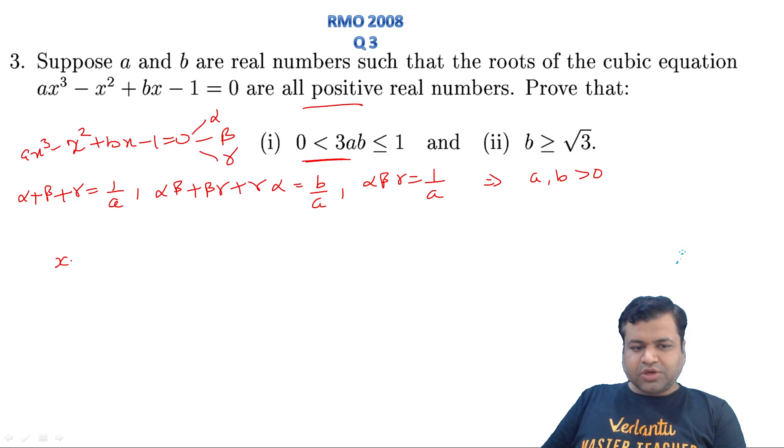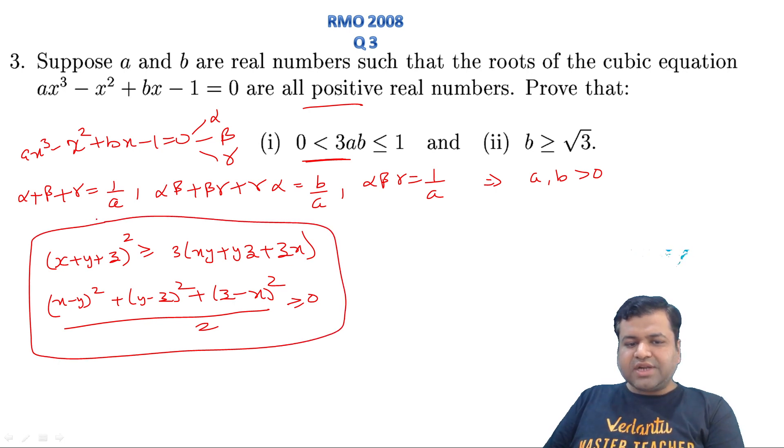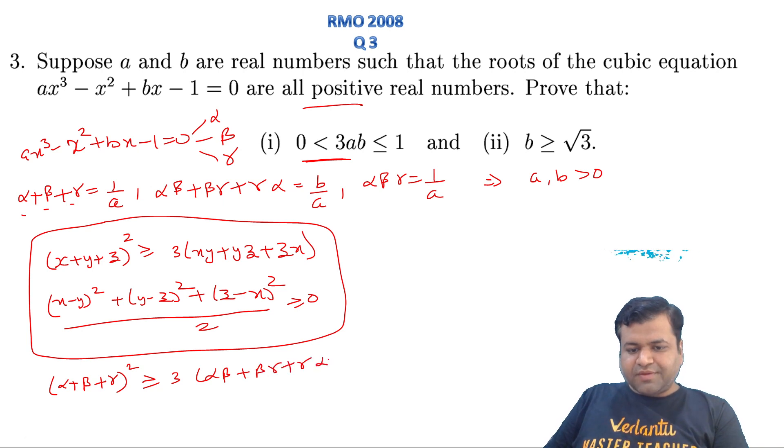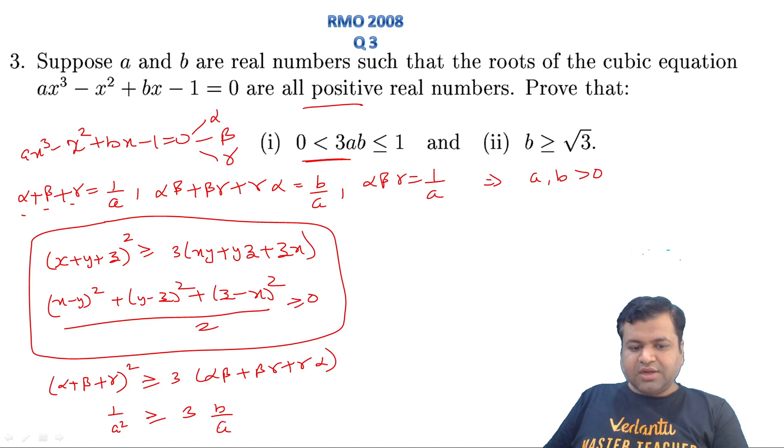Now we have a very simple result that you may know: (x + y + z)² is always greater than or equal to 3(xy + yz + zx). This is a very standard inequality. Let's open it. It is (x - y)² + (y - z)² + (z - x)² divided by 2, and we know that this is greater than or equal to zero. Applying this, (α + β + γ)² will be greater than or equal to 3(αβ + βγ + γα). This is sum of the roots, I know that it is 1/a, so the square will be 1/a². That will be greater than or equal to three times b/a.